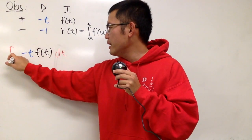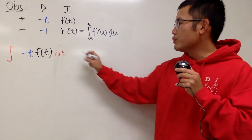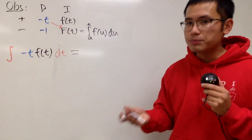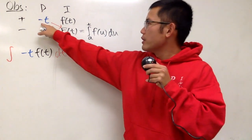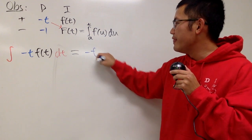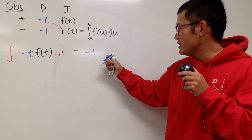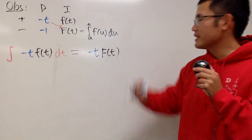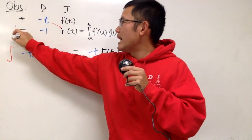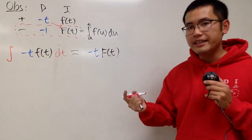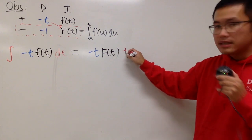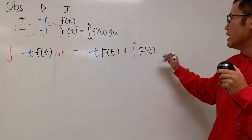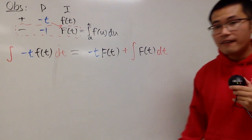Then we have to remember that when we multiply the diagonals along with the sign right here, that's going to be the first part of the answer — no more integral in the front. So let me put down negative t right here. And then we have to multiply by capital F of t. Then we will have to multiply this row right here, and that's still going to give us an integral. Negative times negative gives us positive and the integral. And that's just 1 times f of t, so just f of t with dt. Very nice.